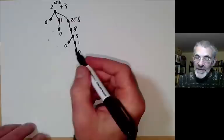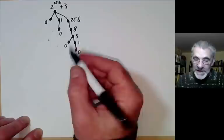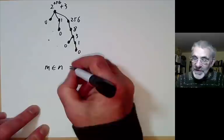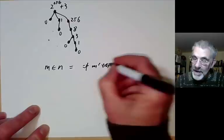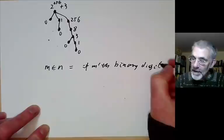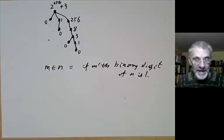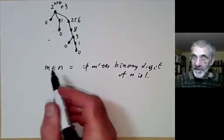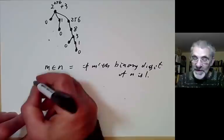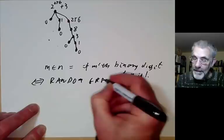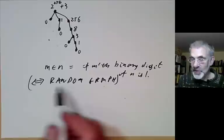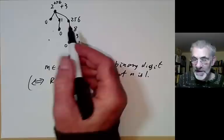In fact, there are several computer languages that actually have a special operation that does this encoding. You can have an operation where m is a member of n if the m-th binary digit of n is 1. Various computer languages actually have this instruction in them. You can also form a graph of all integers with a line connecting them if one integer is a member of another, and this actually gives you something called the random graph. Strictly speaking, the random graph is an undirected graph while the graph of rooted trees is directed, but never mind.